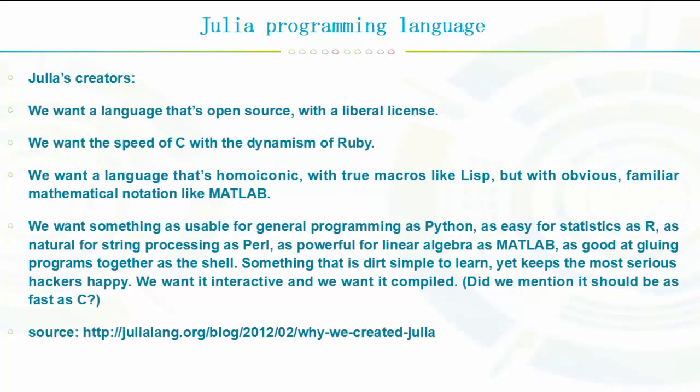Julia's creators said on their blog why they created Julia, and I'm going to quote them: "We want a language that's open source with a liberal license. We want the speed of C with the dynamism of Ruby. We want a language that's homoiconic with true macros like Lisp, but with obvious familiar mathematical notation like Matlab."